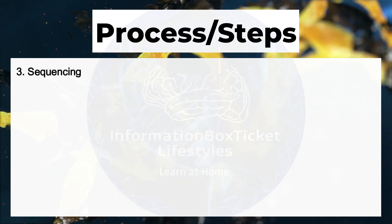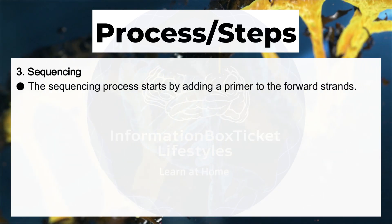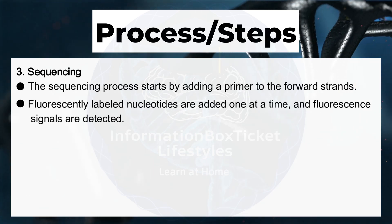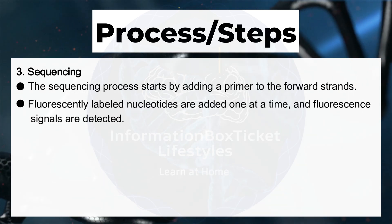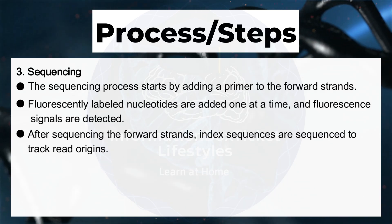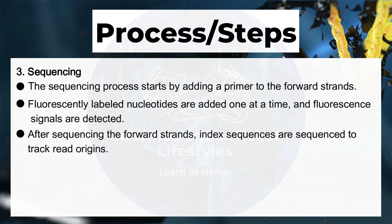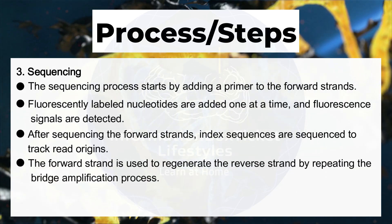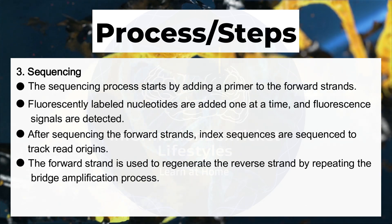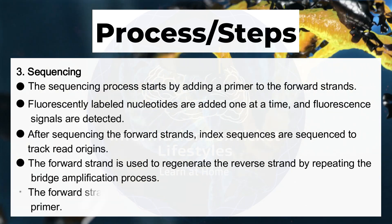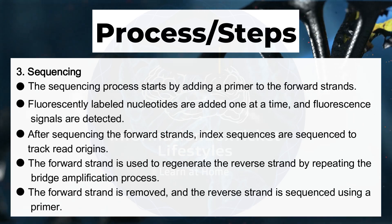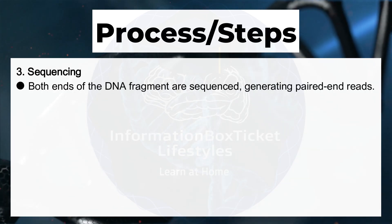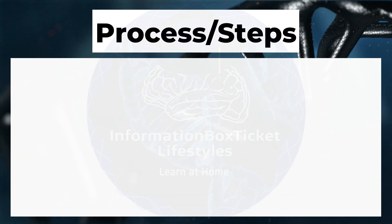Step three: sequencing. The sequencing process starts by adding a primer to the forward strands. Fluorescently labeled nucleotides are added one at a time, and fluorescence signals are detected. After sequencing the forward strands, index sequences are sequenced to track read origins. The forward strand is then used to regenerate the reverse strand by repeating the bridge amplification process. The forward strand is removed, and the reverse strand is sequenced using a primer, generating paired-end reads from both ends of the DNA fragment.